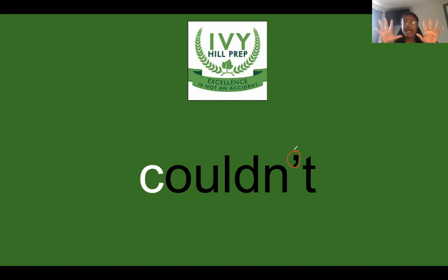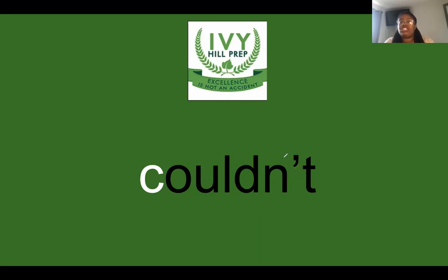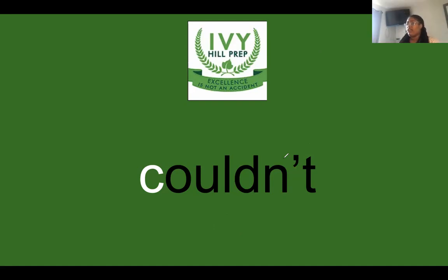We have 'could' and we have 'not.' When that apostrophe is there in N-apostrophe-T, it's one word. So it's 'couldn't' — this means 'could not.' These two words mean the same thing: 'couldn't' and 'could not.' For example: I couldn't go to the store. I could not go over there and see that dog. They mean the same thing!